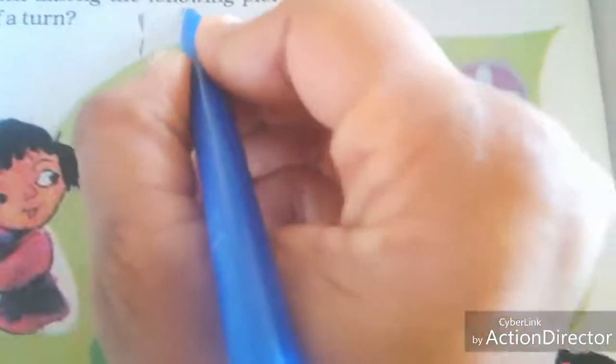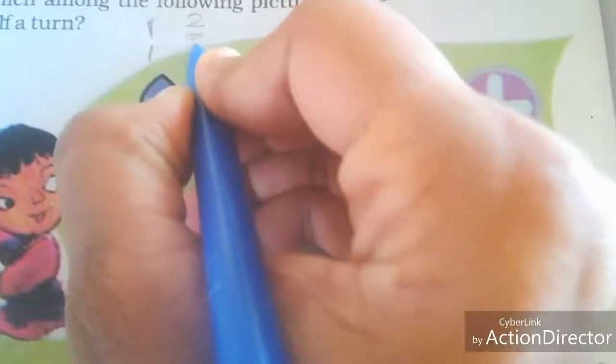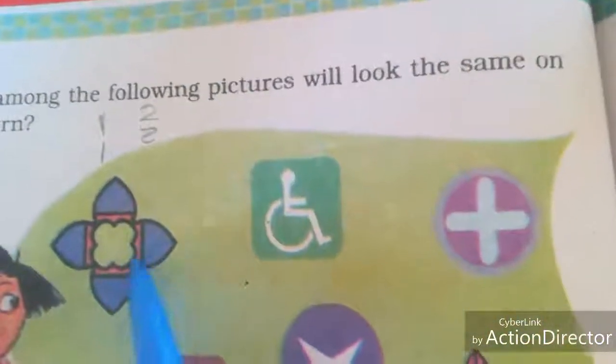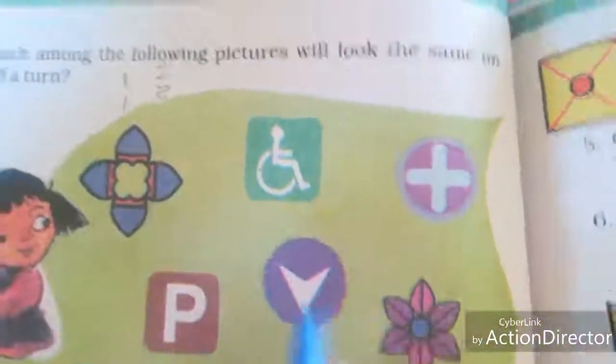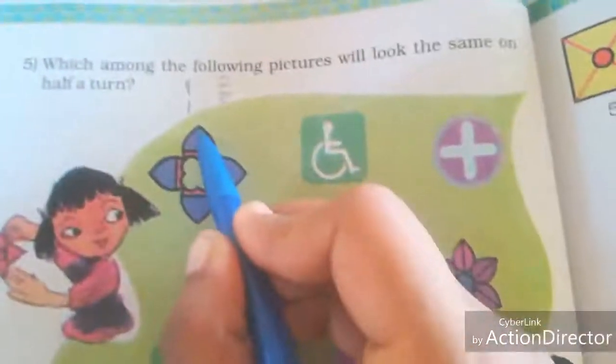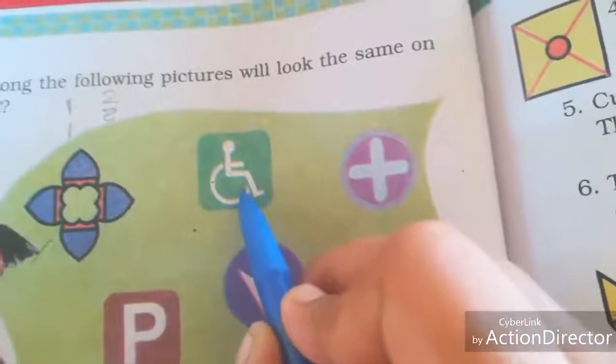The one in the opposite direction will look like this. The two in the opposite direction — the reflection of two — will look like this. So this is the half a turn. Now we are going to find which picture will look the same on a half a turn. In this half a turn, it won't change. But this one will change.